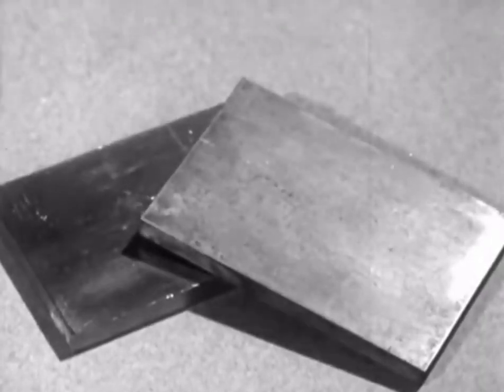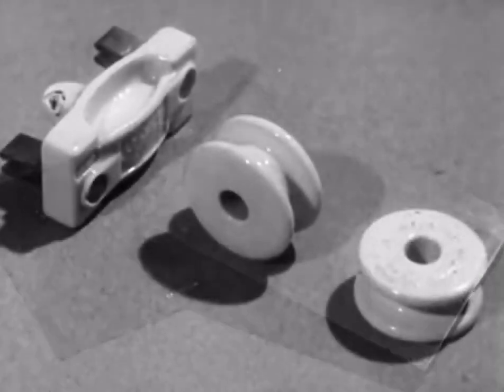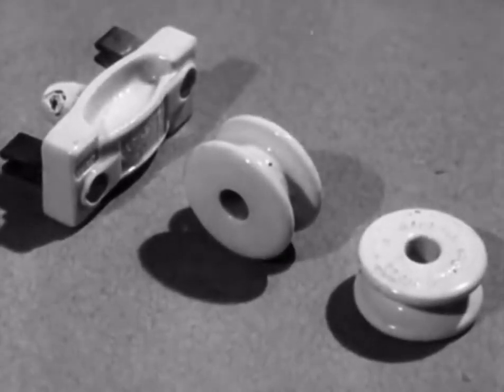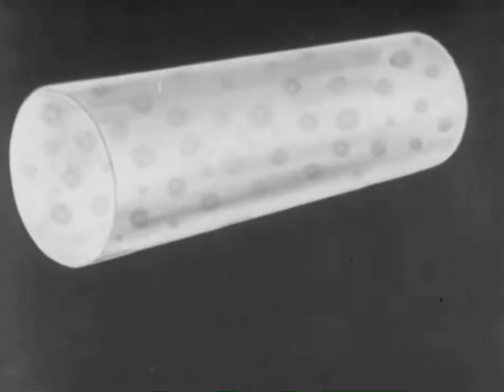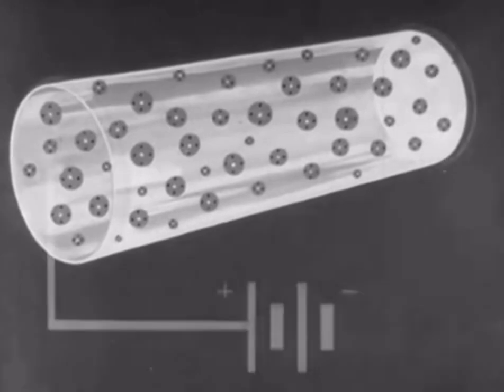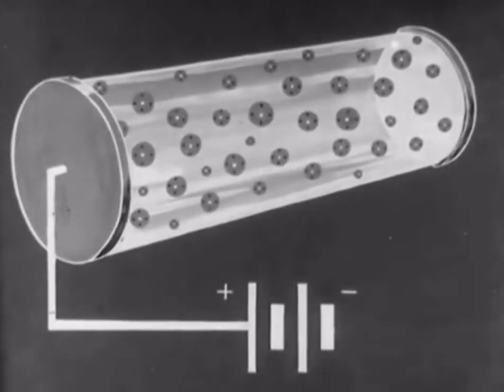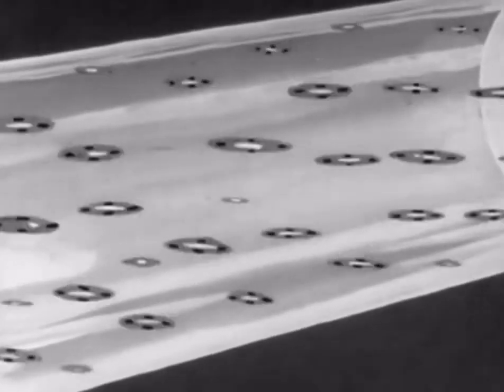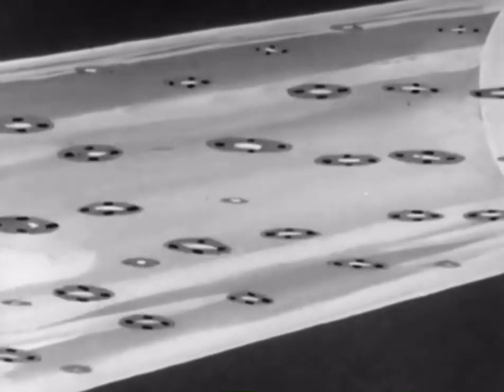Now let us consider an insulating material such as porcelain. Here, the electrons are tightly bound to their atoms, and they can only be made to move with the greatest difficulty. When we connect up a battery, as we did with the copper, the atoms are under strain, but no current flows, as there are no free electrons to carry it.